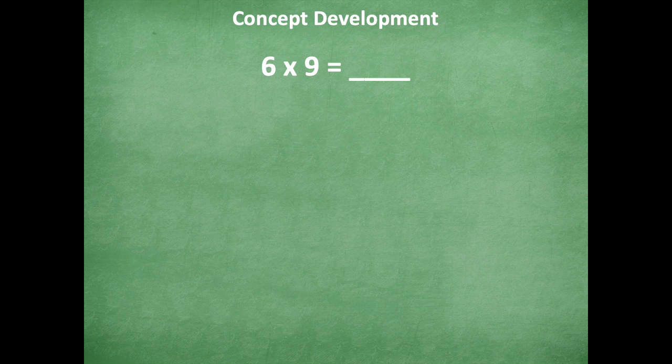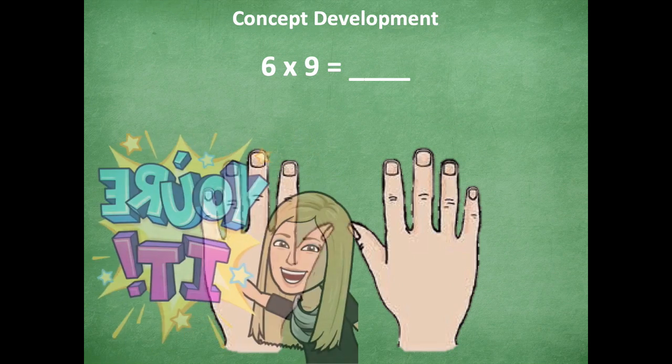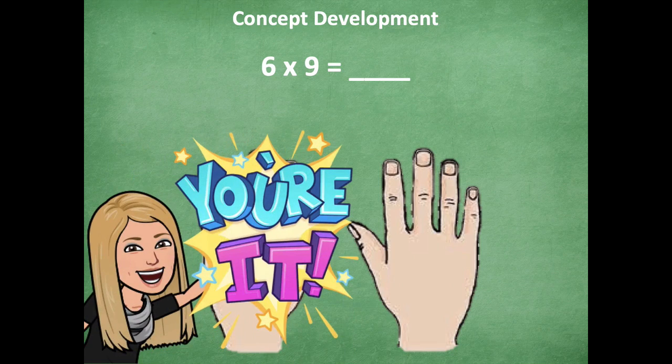All right, so let's look at another one. We have 6 times 9. There's our hands. I want you guys to pause the video and try this strategy. So go through, start on the left-hand side, count across until you get to that sixth finger, put it down. Whatever's on the left-hand side is your tens, and the right side of your finger down represents the ones. So go ahead and give it a try, and then click play when you're ready to share together.